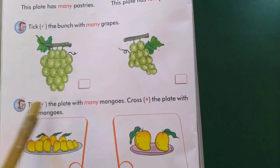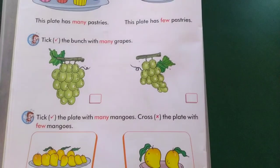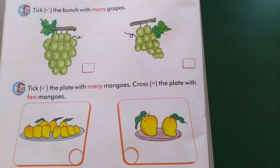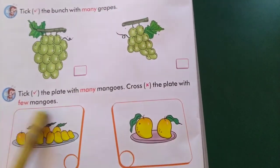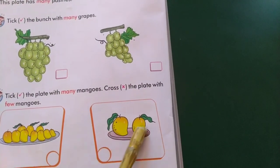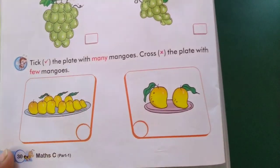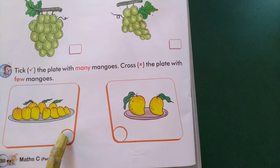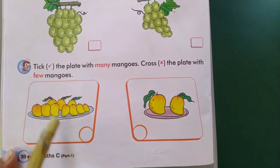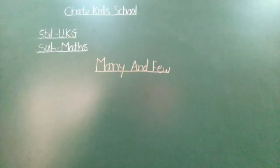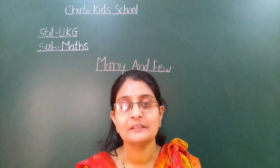Next, tick the plate with many mangoes, cross the plate with few mangoes. Many means jastu, few means less. Here are many mangoes. And here we see only two mangoes — means few mangoes. Tick in this circle and cross in this circle. This is many mangoes and this is few mangoes. I hope you understood this lesson — practice and revise at home. Thank you.